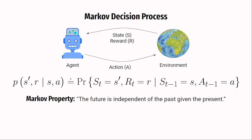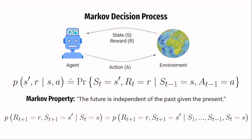The Markov property states that the future is independent of the past given the present. This might seem like a philosophical statement but has mathematical simplicity attached to it. In the real world, one might think that the probability of seeing state S' and reward R depends on the full history of the trajectory taken by the agent. But the Markov property makes it simpler by saying that once the preceding state is known, the full history can be thrown away, making the dependence of S' and reward R only on the previous state. This simple property is of great help in reinforcement learning.